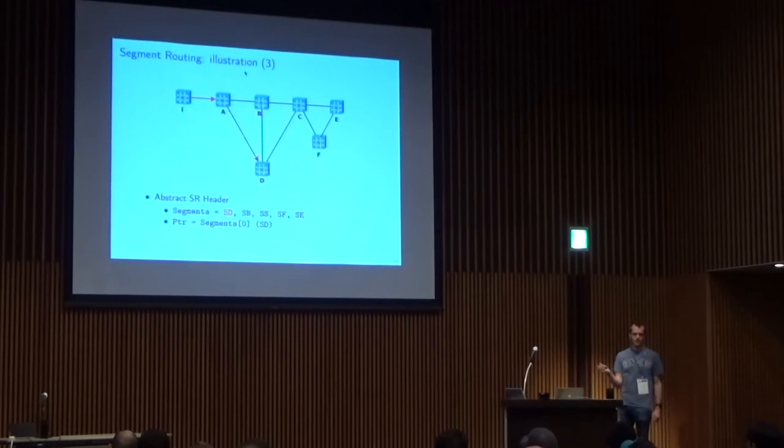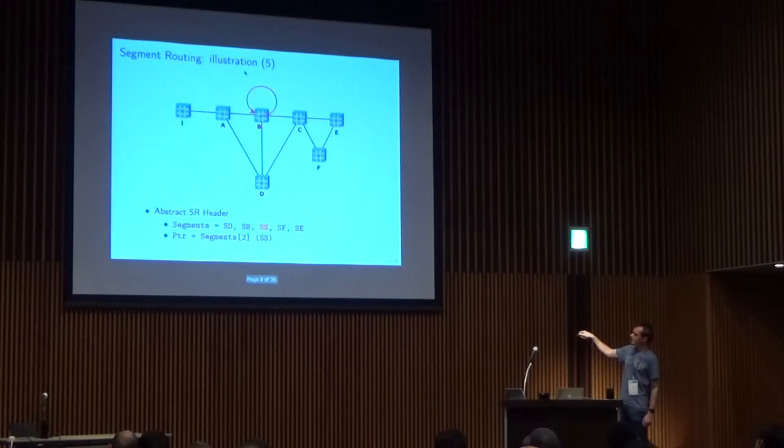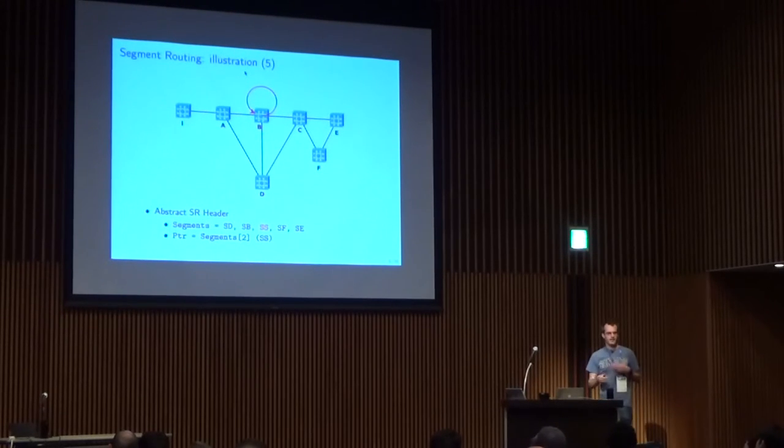Then D receives the packet and inspects the segment routing header, and now sees that the current segment is segment B, and so again it routes the packet through node B with the shortest path. Now we have a special segment here, segment S, that represents a service segment, for example any network function that must be applied. Node B will simply apply this function to the packet, and note that only node B knows about this segment. It is a segment that is local to the node and not known globally by the network.